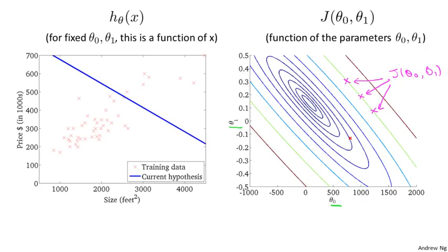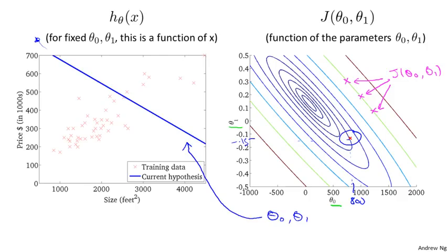Let's look at some examples. Here I have a particular point with theta 0 equals about 800 and theta 1 equals about minus 0.15. This point corresponds to a hypothesis where theta 0 is about 800 — so this intersects the vertical axis around 800 — and a slope of about minus 0.15. This line is really not such a good fit to the data, and so its cost is a value pretty far from the minimum — a pretty high cost, because this is just not that good a fit to the data.